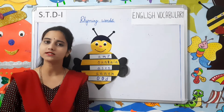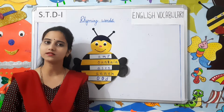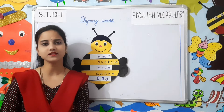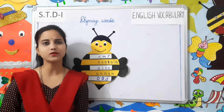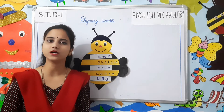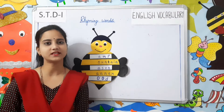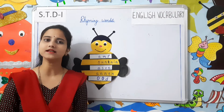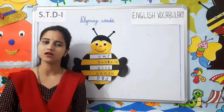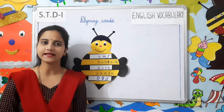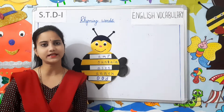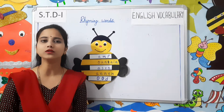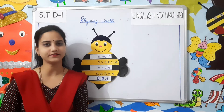What are rhyming words, students? Rhyming words are words that have similar ending sounds. Their spelling and meaning both are different.